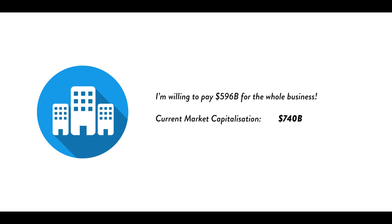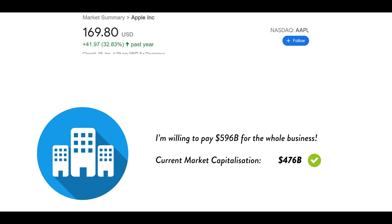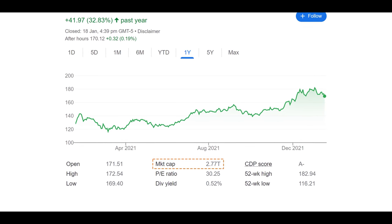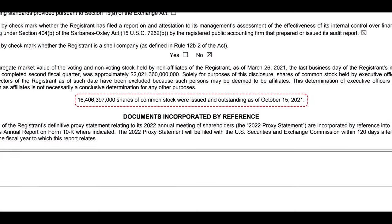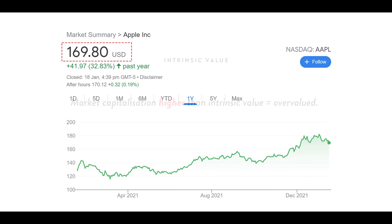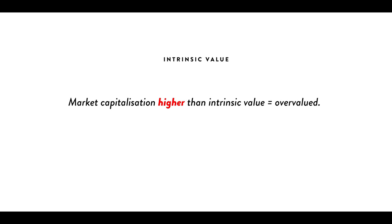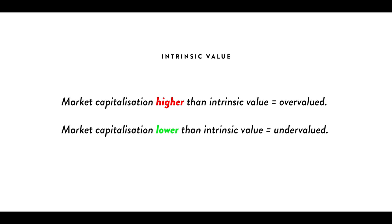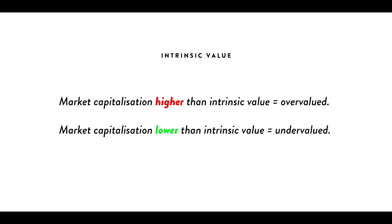Once we figure out how much we'd be willing to pay for the business, we can then compare that intrinsic value to the current market capitalization of the business. The market cap is the total stock market value of a company — equal to the amount of shares the business is divided up into multiplied by the current share price. If the market cap is higher than our intrinsic value, the business is overvalued. If the market cap is lower, that's a good sign because it means the business is undervalued.